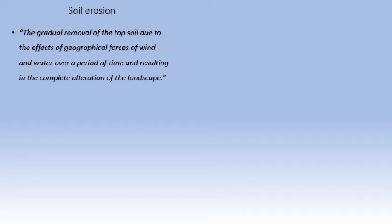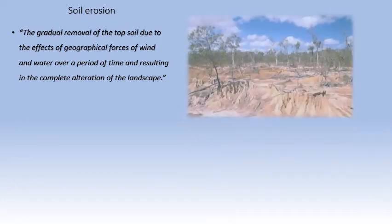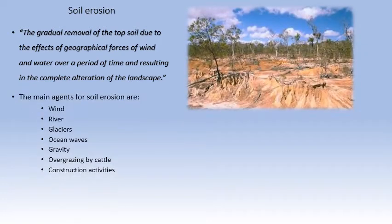If it is only the removal of topsoil, then it's soil erosion. If it is because of geographical forces of wind and water, then it is soil erosion. If it is not happening very fast but over a period of time, and if we are able to see a change in the landscape — if all these things happen together — then it can be termed as soil erosion. Here is a picture of soil erosion showing how it has completely altered the landscape.